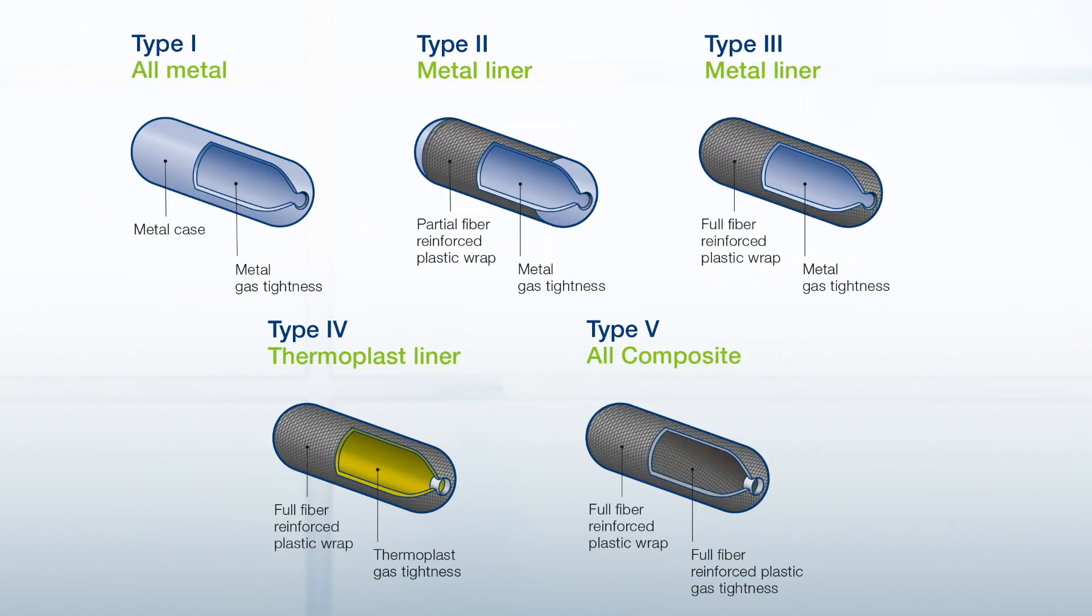Now here you can see an overview of all the five different tank types. The main difference are in the materials used to manufacture these tanks. For mobile applications of hydrogen, mainly the Type 4 tanks are used because they provide the highest storage density for our mobile applications.